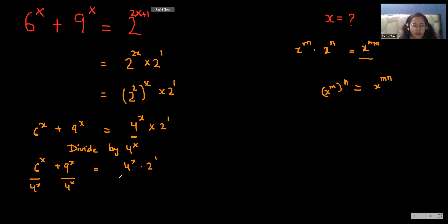So (6/4)^x plus (9/4)^x equals 4^x multiply 2 divided by 4^x. This is also 4^x and this is also 4^x. So I can eliminate this. So we get (6/4)^x plus (9/4)^x equals 2.